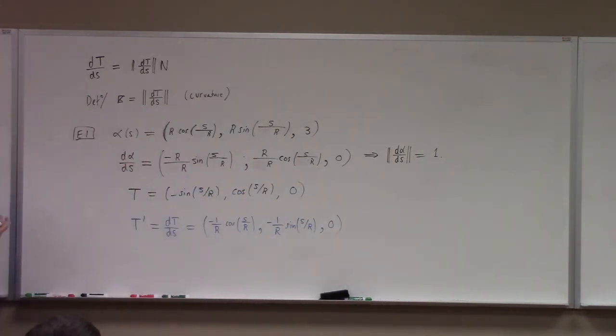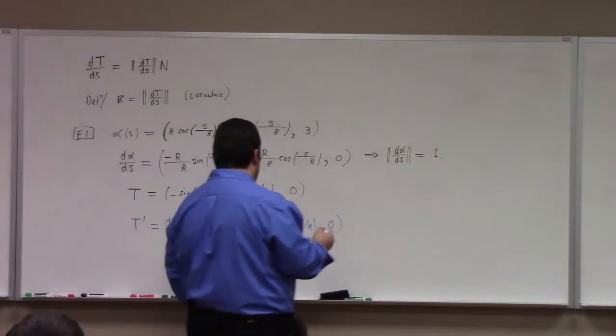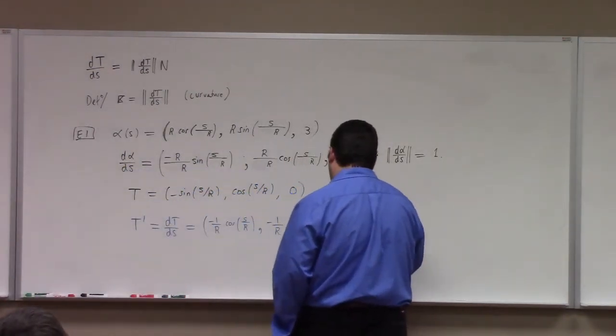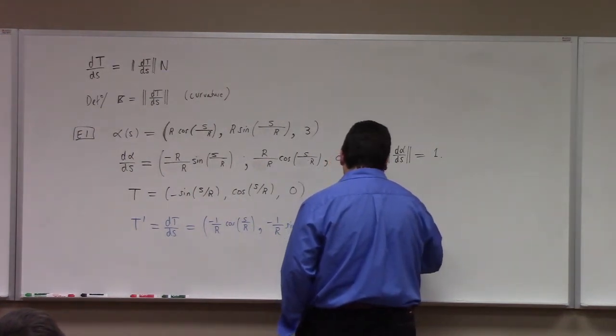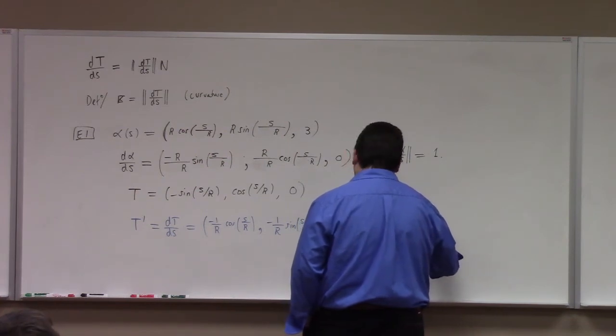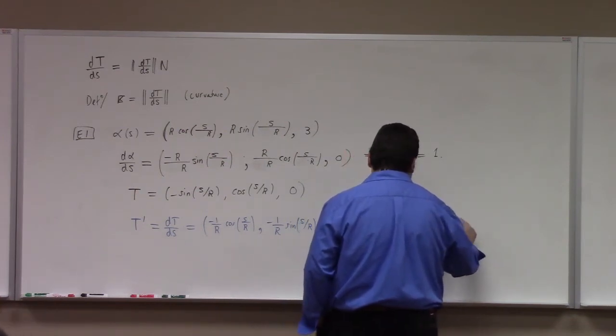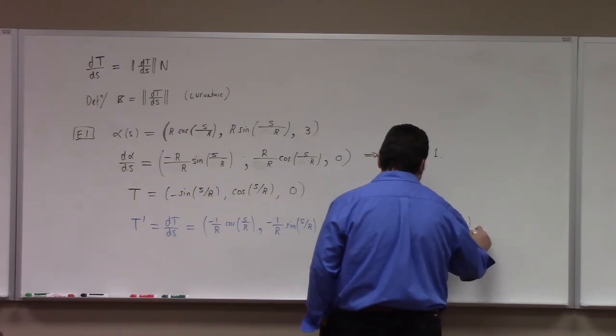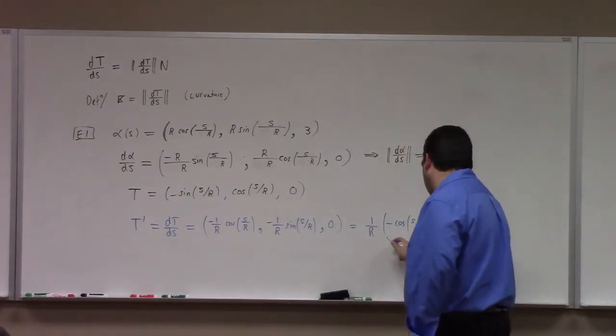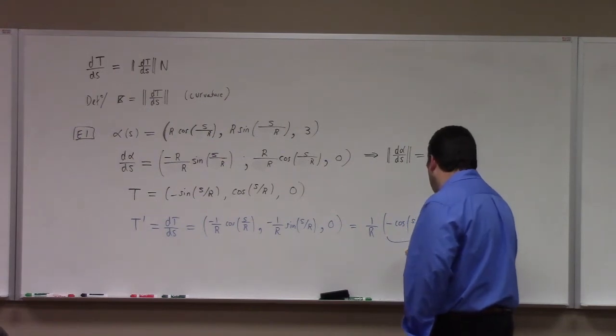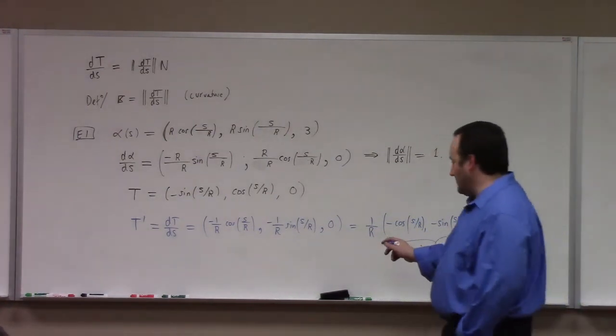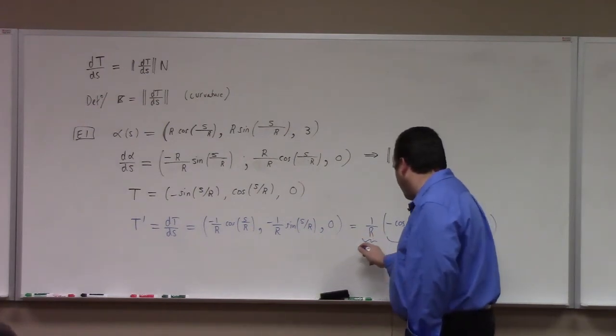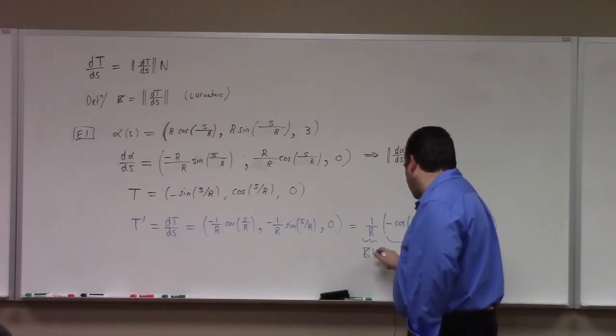Which, of course, we can write as what? This is actually equal to 1 over r, right? Times minus cosine of s over r, minus the sine of s over r. This is a unit vector. This is the unit normal. Right? This constant out front is what we call the curvature.